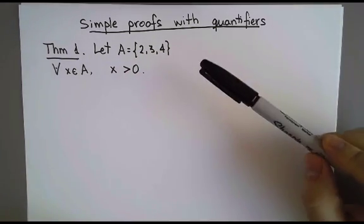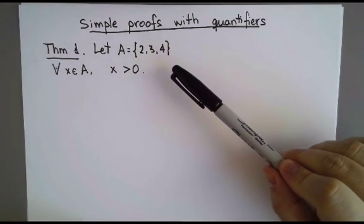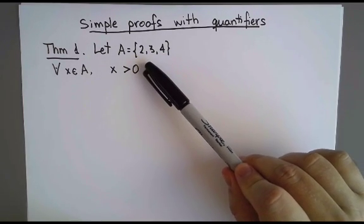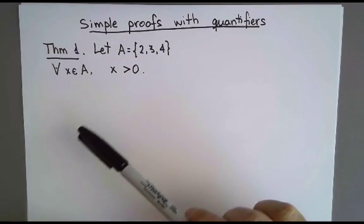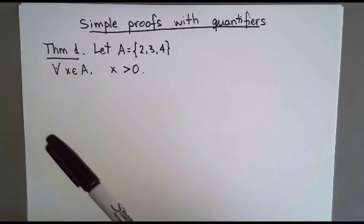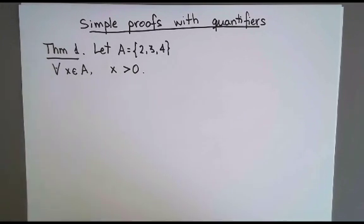Here's the first example. I have a theorem that says the following. I define the set A as a set with these three elements: 2, 3, and 4, and I want to prove this. This reads that for every x in A, x is positive.